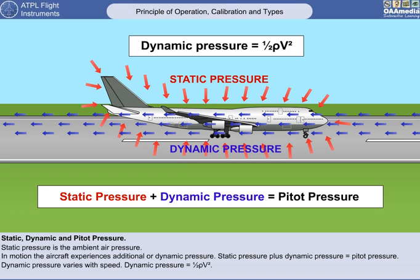The dynamic pressure experienced by the aircraft will vary with the speed of the aircraft through the air, and mathematically this relationship is expressed in the formula: dynamic pressure equals a half rho V-squared, where V is the true airspeed and rho is the density of the air.